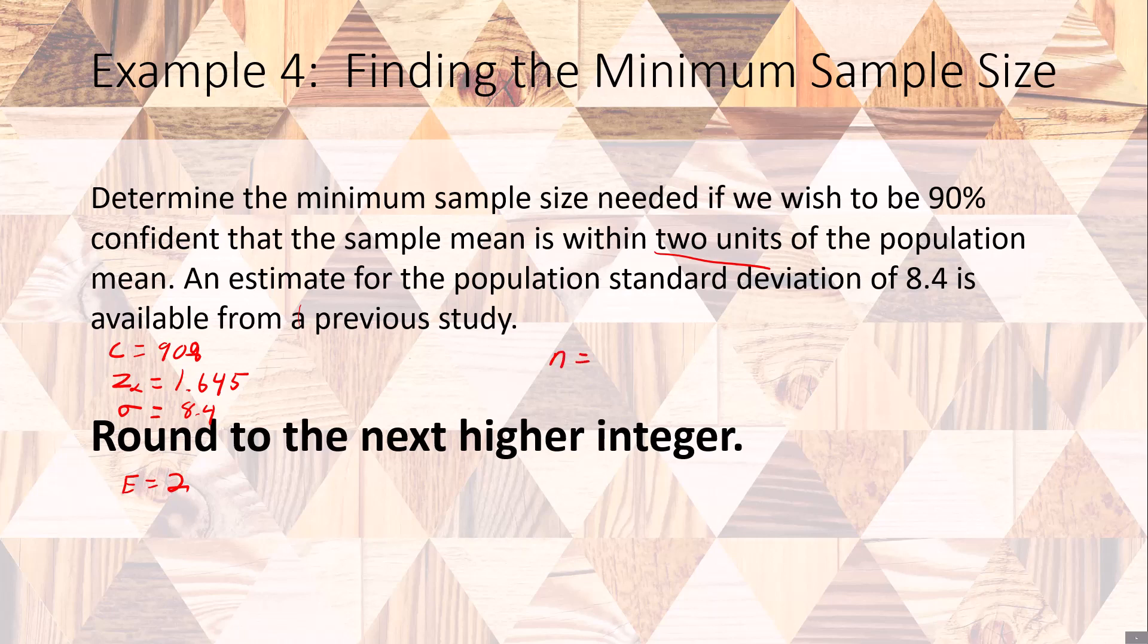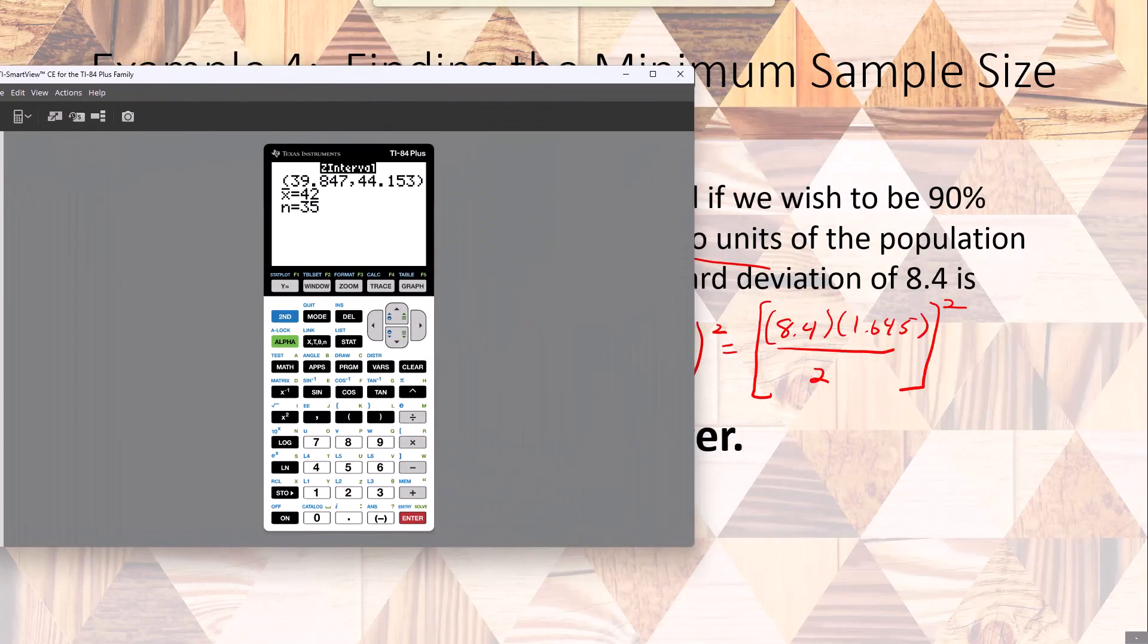That means n, my sample size, has to equal my standard deviation times my critical value divided by my error, the entire thing squared. That's going to be 8.4 times 1.645 divided by 2. Now there's no program on your calculator that will do this for you, you actually have to do this by substituting and then doing the actual computation in the calculator.